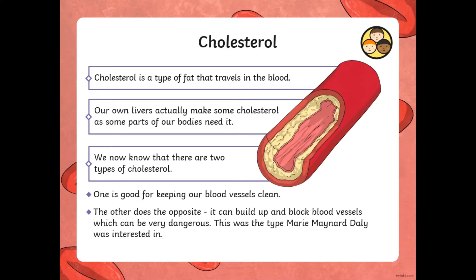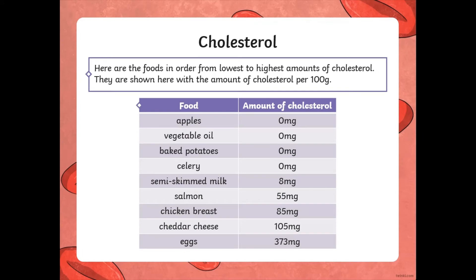This is the type that Marie Maynard Daly was very interested in. Here are some types of food and their amounts of cholesterol. You can see things like apples and baked potatoes have zero milligrams. Semi-skimmed milk has eight milligrams, going up to salmon, chicken breast, ginger cheese, and eggs. These are all types of foods with a different amount of cholesterol per hundred grams.